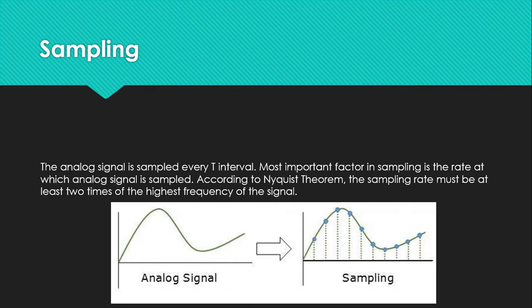On the left figure you can see the analog signal, and on the right figure you can see the sampling at certain T-intervals marked.